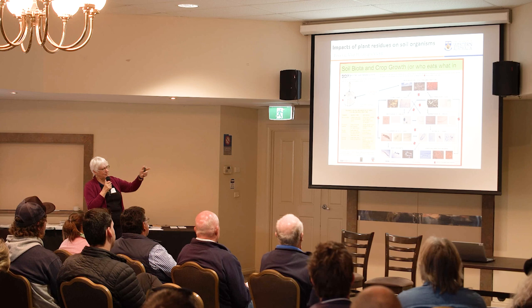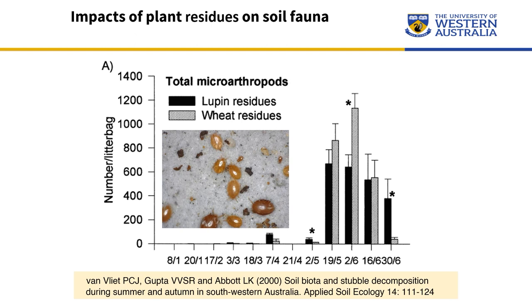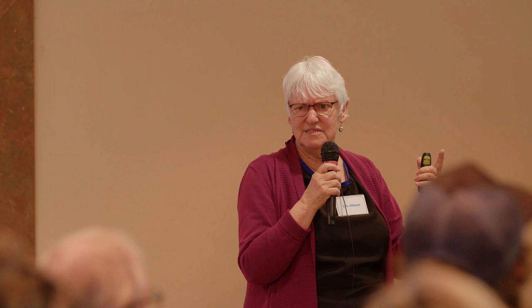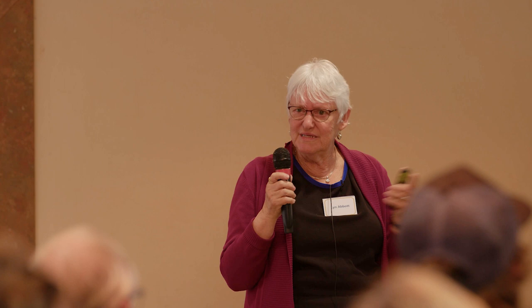Going on from the animals — I'm not a soil animal expert, but we've had researchers do work on this. This is the number of microarthropods over time. If you sample soil in summer, nothing's happening — there's nothing there. But once you get rain, bang. In this case we're adding different types of residues. The point is that if you sample a soil at a particular time, things might be sleeping — you might think there's nothing there. If you sample at a different time, they'll be there. So sampling soil biology is complex because it depends on when you do it and what's happening.